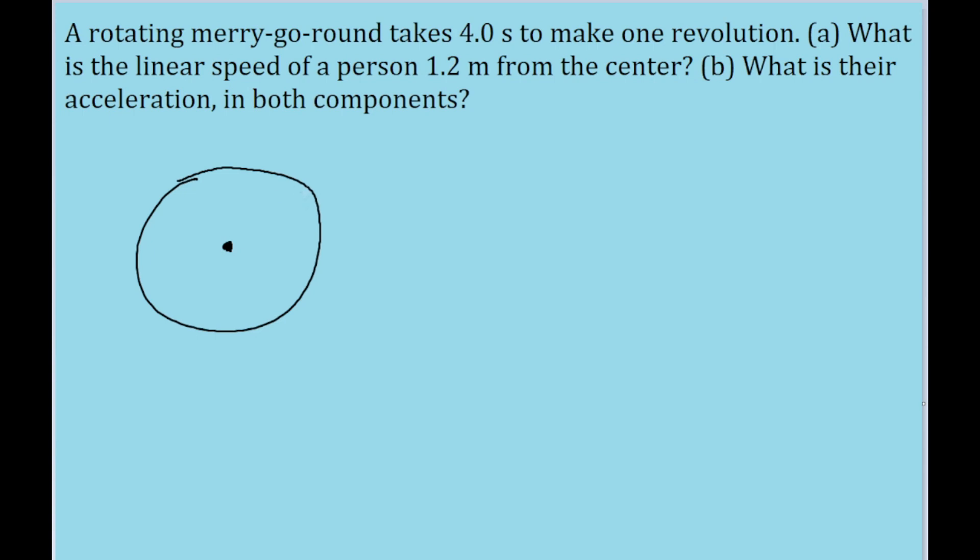Just for simplicity's sake, I'm going to show that on the diagram as just being at the edge of the merry-go-round, though it could be at some distance closer. So I'm defining this distance here to be 1.2 meters. And the problem asks for the linear speed.